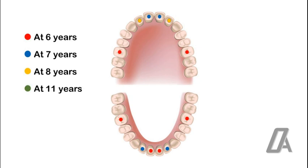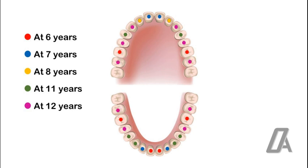At 11 years, a group of teeth erupts simultaneously, starting with mandibular canines, mandibular first premolars, and maxillary first premolars. At 12 years, mandibular second premolars, maxillary second premolars, and maxillary canines are seen erupting. Later, maxillary and mandibular second molars also erupt at 12 years.